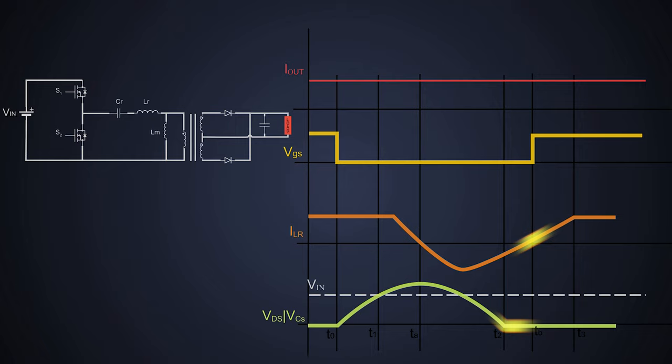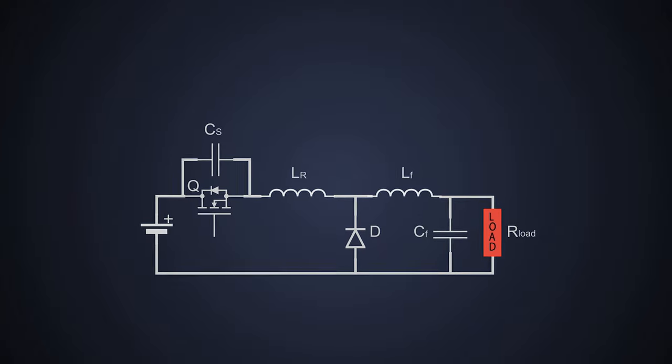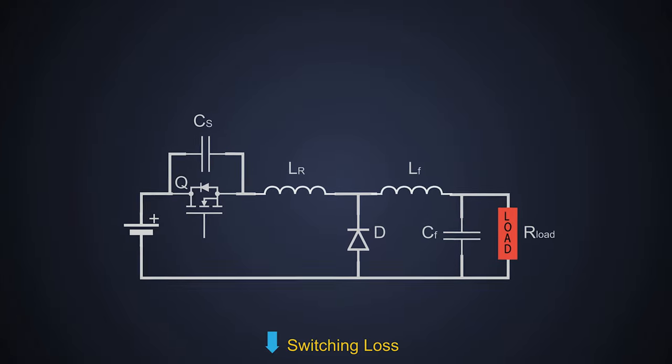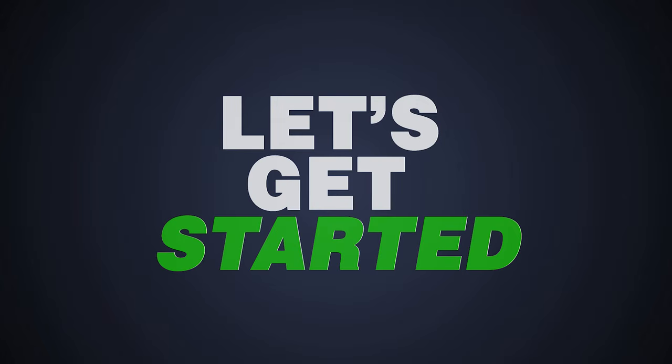Also, while turning off, we slow down the rate of rise in the drain-to-source voltage of the MOSFET so that there will be very minimum overlap between drain current and voltage. This type of soft switching reduces the switching loss in the power electronic converter. So let's see how it works.